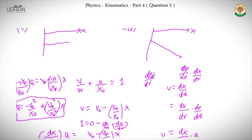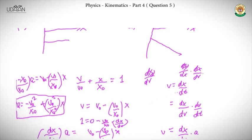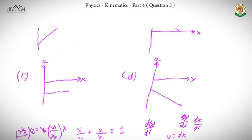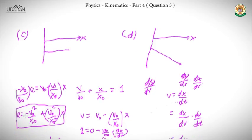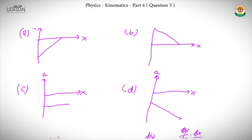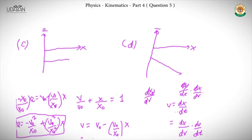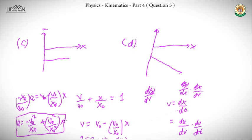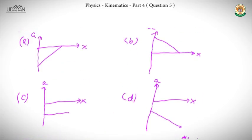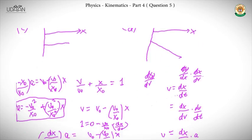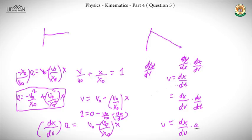From the equation, at x = 0, the acceleration is negative, so we can immediately eliminate option B. The equation is linear in x with a positive slope, leaving only one matching graph. The answer is A. The key relation used throughout was v = (dx/dv)·a, which is very helpful for many problems of this type.